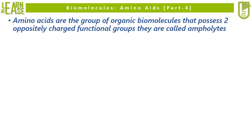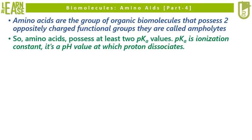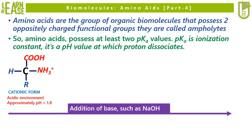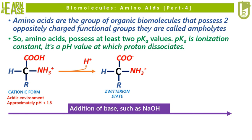Amino acids are organic biomolecules that possess two oppositely charged functional groups and are therefore called ampholytes. Amino acids possess at least two pKa values. pKa is the ionization constant — it is the pH value at which a proton dissociates. The amino acid exists in the cationic state when the pH of the solution is highly acidic. On addition of base such as NaOH, the pH increases, and COOH loses its proton and gets converted to COO−. The cationic amino acid is then converted to the zwitterion state. The pH at which COOH loses its proton is termed pKa1.